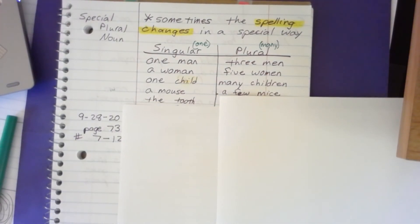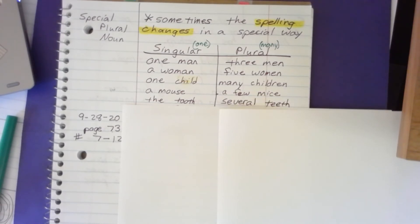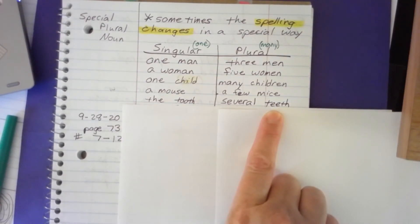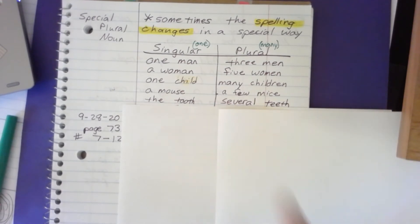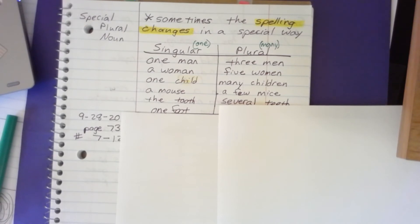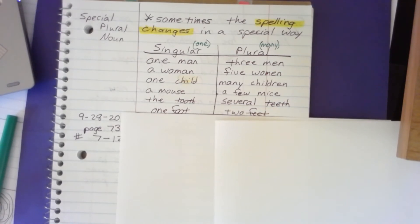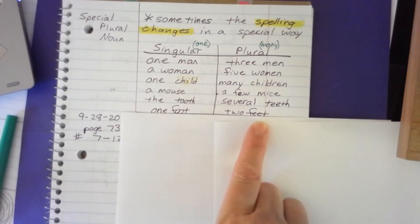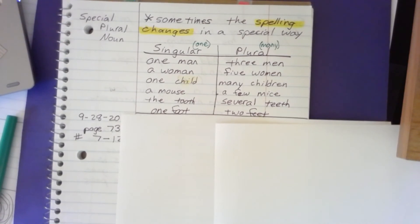The tooth fell out — one tooth. Do we say 'many tooths'? No, we say several teeth — see how the spelling changed? And one foot: do we say 'many foots'? No, two feet — we change the spelling to E-E. Go ahead and pause the video and write these words.